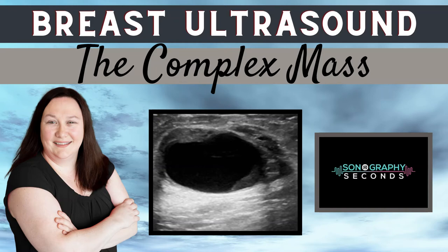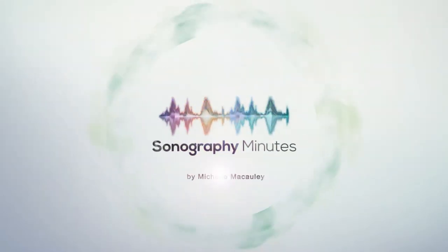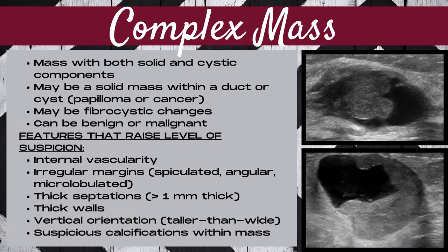Welcome to Let's Ultrasound. On today's edition, let's talk about the complex mass on breast ultrasound. The third category of breast cysts is known as a complex mass — a mass that has both solid and cystic components. This may be a solid mass within a milk duct or within a cyst. A papilloma or cancer is always a concern with a complex mass; however, this could also be fibrocystic changes in the breast.